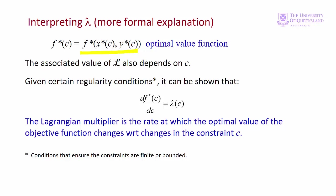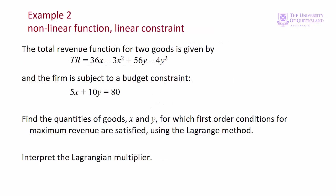Now let's look at another example and interpret the Lagrange multiplier. In example 2, a firm produces two goods x and y and has a total revenue function. The first two terms relate to revenue from x — price of x times quantity of x — and the second two terms relate to revenue from y. There's also a budget constraint: for example, labour available may be limited to 80 hours, taking 5 hours to produce one unit of x and 10 hours for one unit of y. The firm wants to maximise total revenue. We'll find the first order conditions for a maximum and solve for lambda.